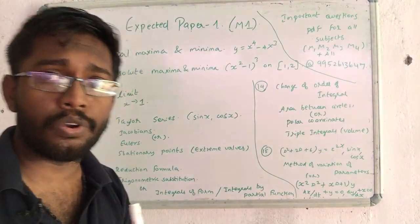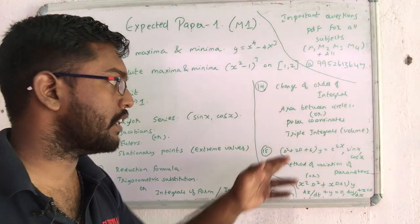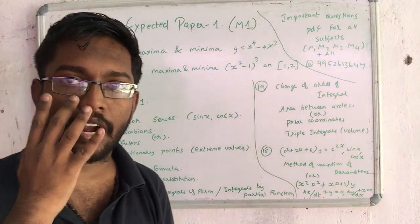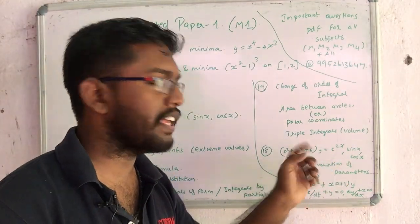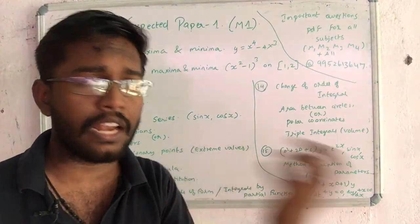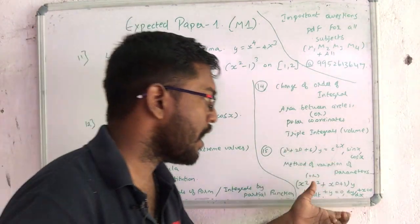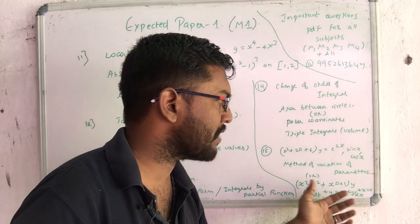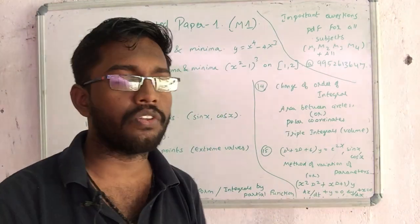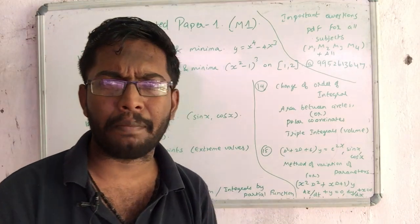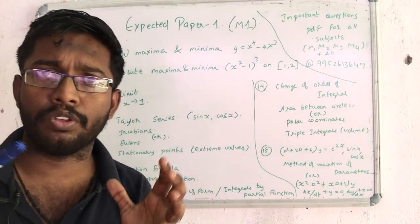We can also see Polar Coordinates and use a triple integral for volume. In the next unit, you can use the D-square operator. D squared e-power — how to do sine and cosine. The method is Variation of Parameters. That means x squared D squared plus xD plus 1 into y. Also dx by dt plus y equals 0, and the dy by dt elimination method.